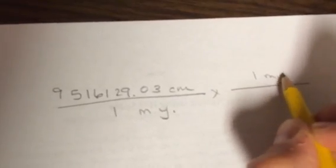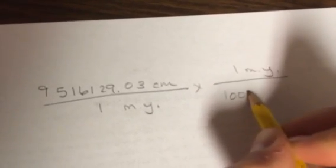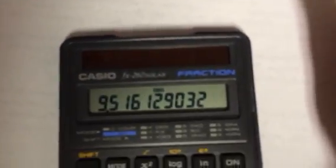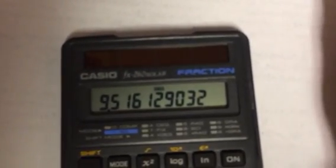951,629.03 centimeters over 1 MY times 1 MY for a million years. And just write out a million if you want to. So thousands, millions of years. So basically, we're just going to take this big number, and we're going to divide it by a million. So we go divided by 1.